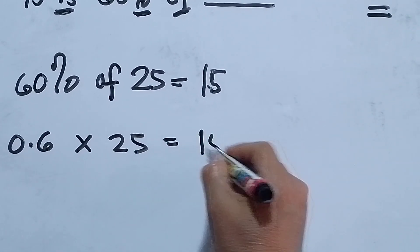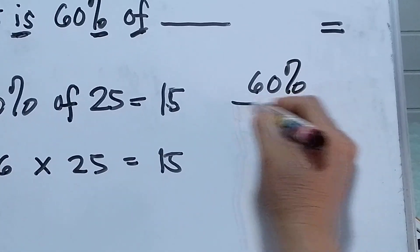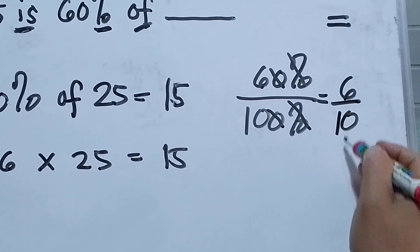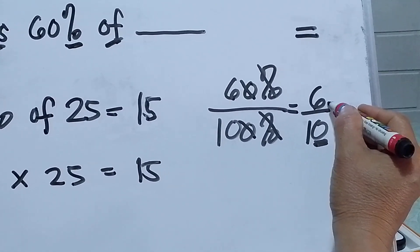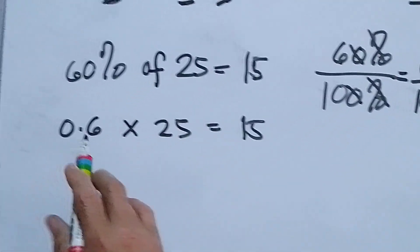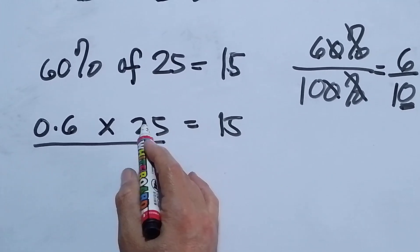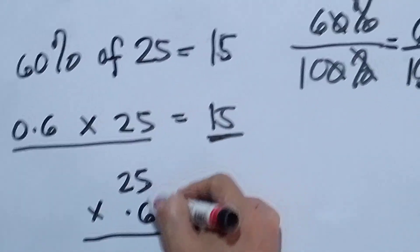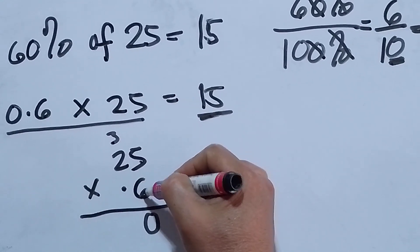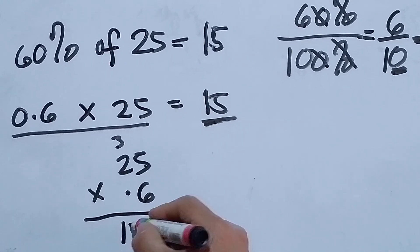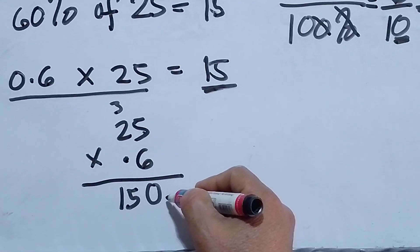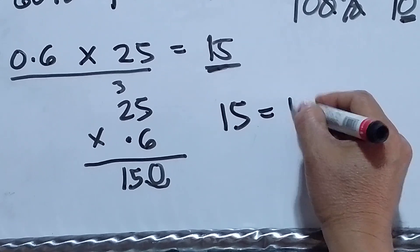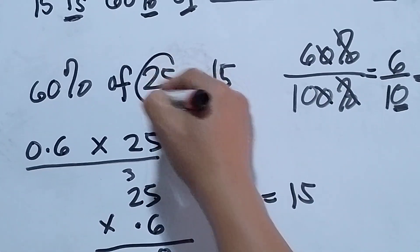We multiply 0.6 times 25: 5 times 6 is 30 carry 3, 2 times 6 is 12 plus 3 is 15. With one decimal place, the result is 15.0. Since 15 equals 15, B equals 25 is confirmed correct. That's all for number two.